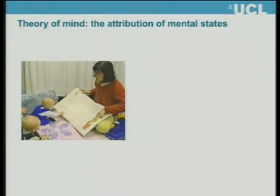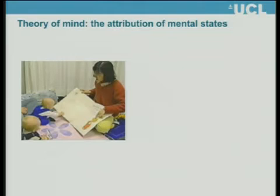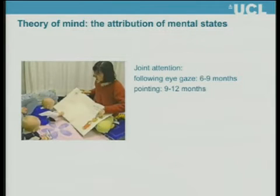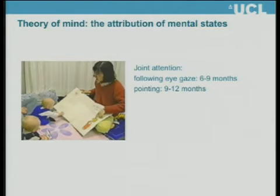Theory of mind is defined as the attribution of mental states — the ability to attribute things like intentions and beliefs to other people and also to oneself. An understanding of joint attention — for example, following eye gaze, knowing that if I look at a certain object I'm interested in it and want to direct your attention to it, and similarly with pointing — develops quite early on in life, certainly within the first year. Probably babies are picking up on that kind of cue when they're doing real-life social interaction.